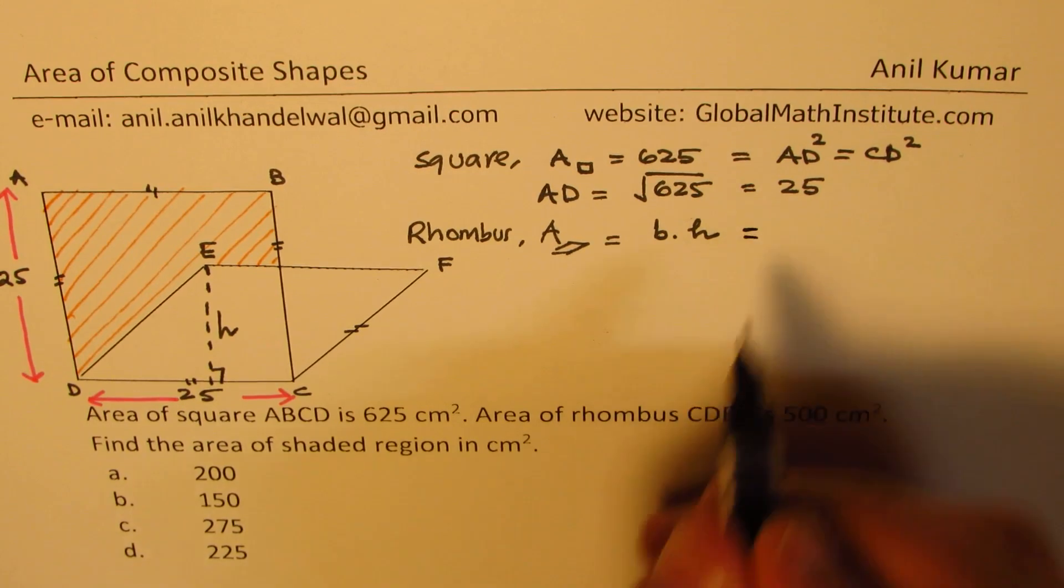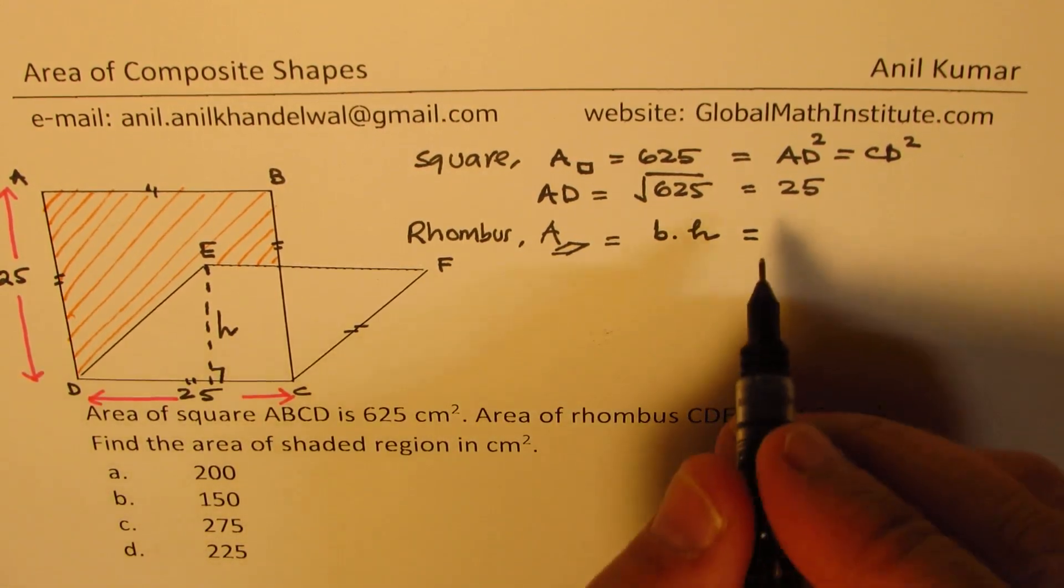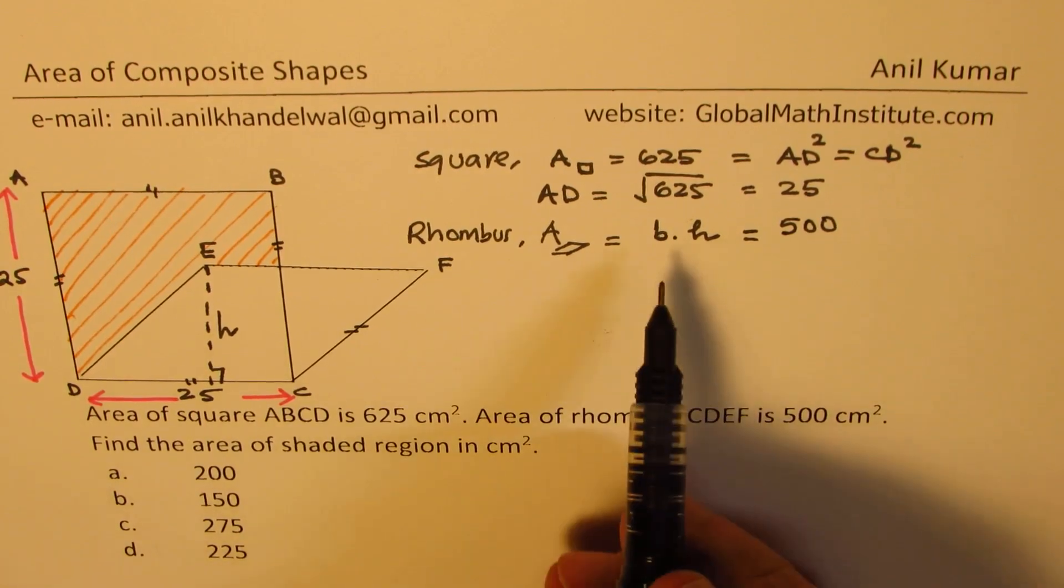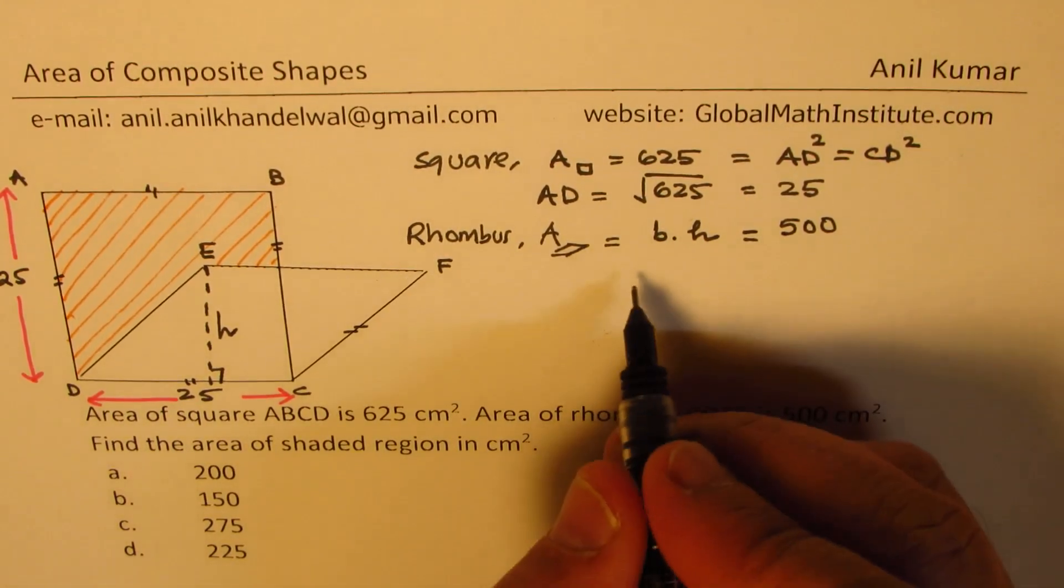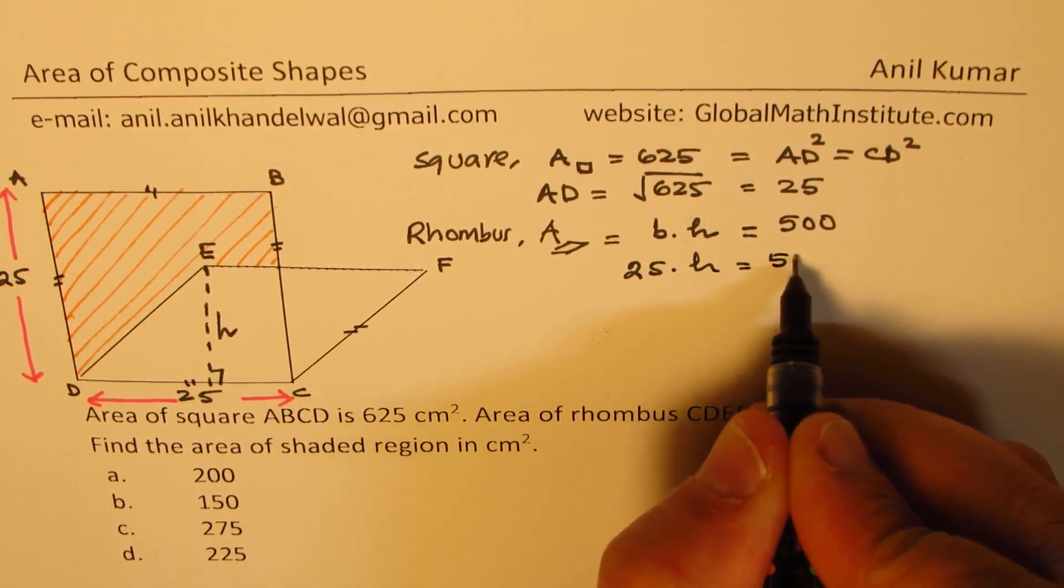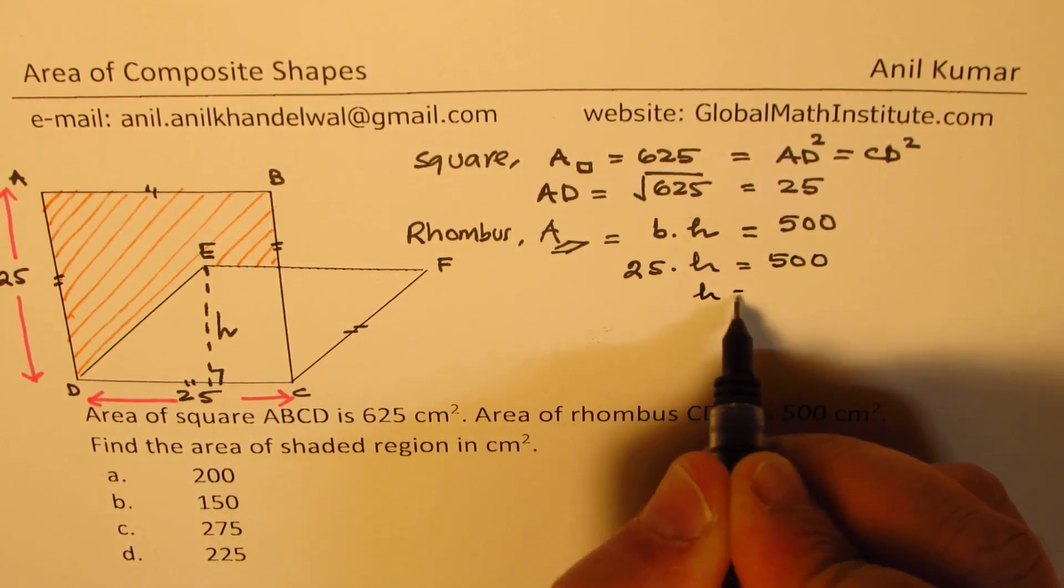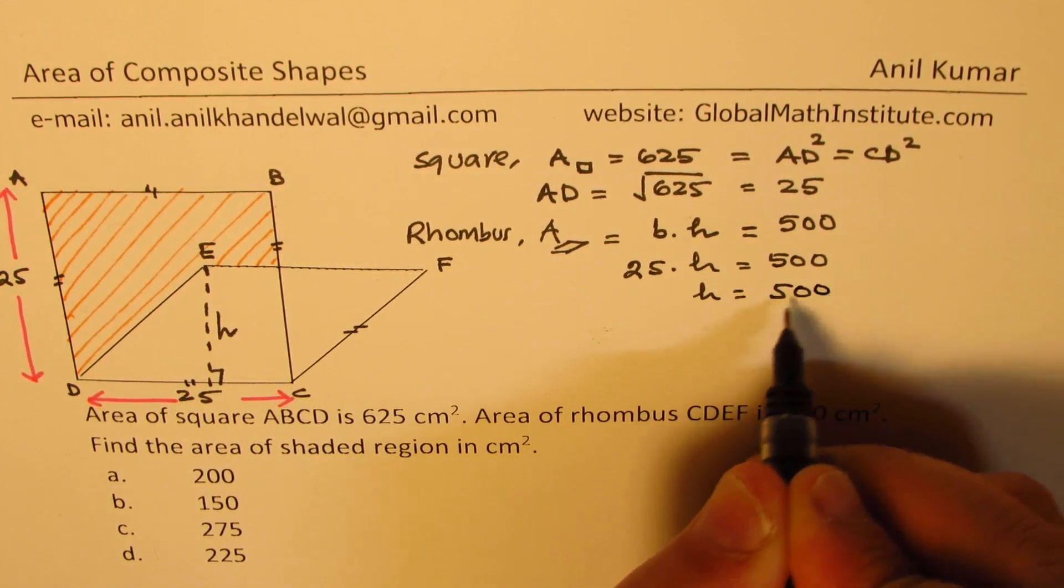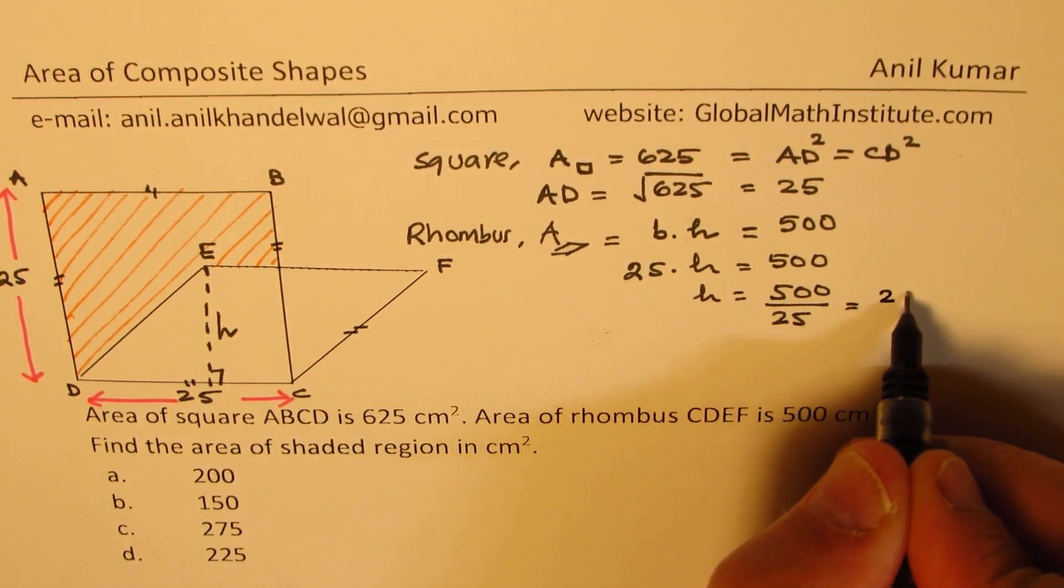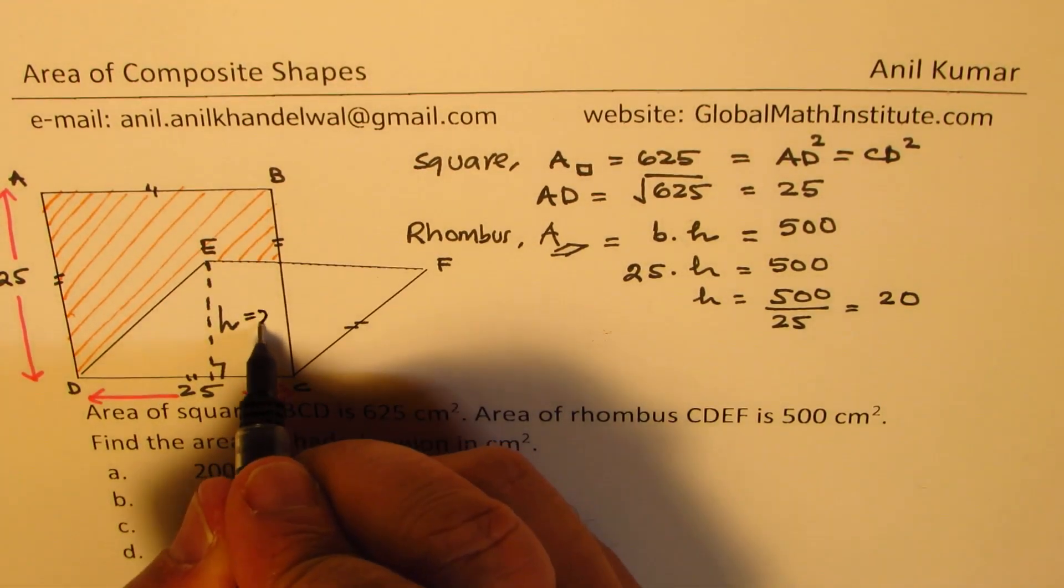And this is given to us as 500 centimeters squared. We know the base is D to C. So we know that this is 25 times height is 500. So we can write height as 500 divided by 25, which goes 20 times. So we know height is 20.